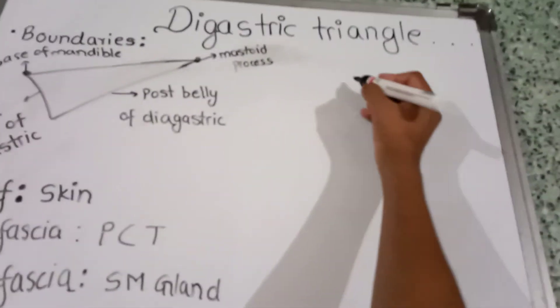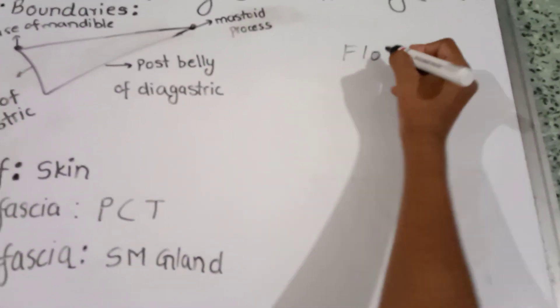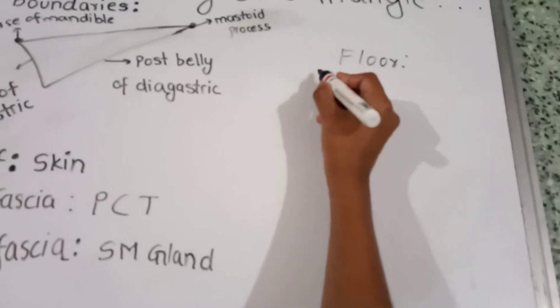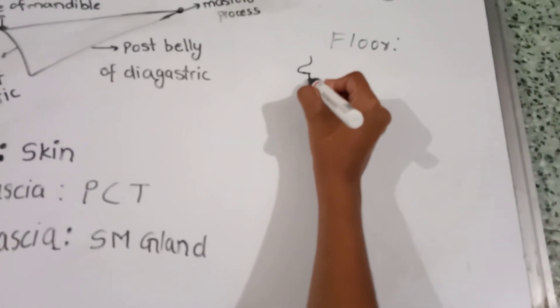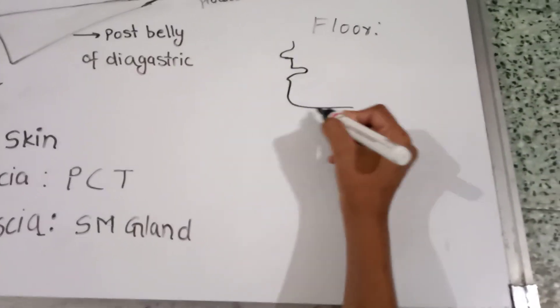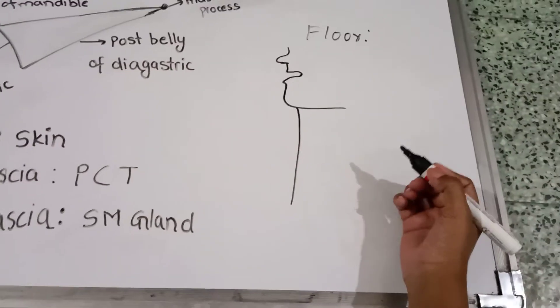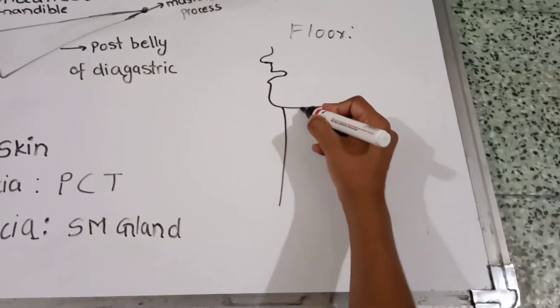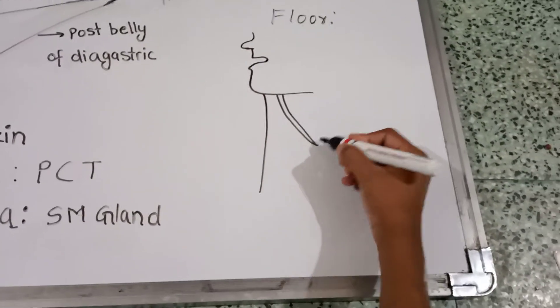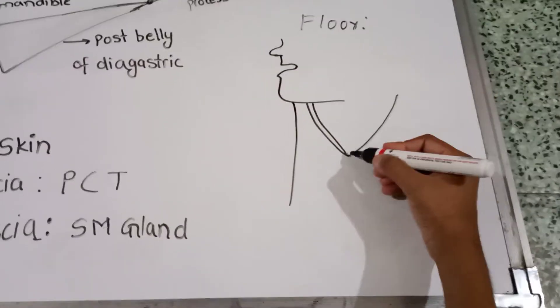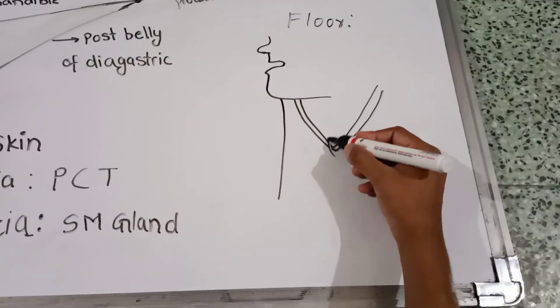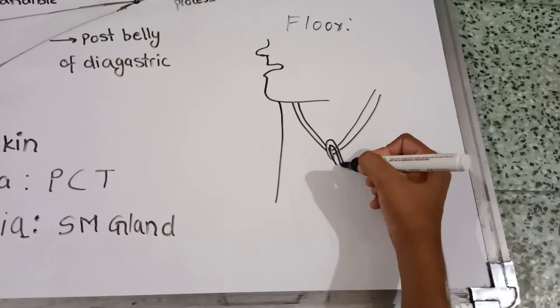Floor: It is formed by the anterior belly of the digastric. This is the posterior belly of the digastric, this is the pulley.